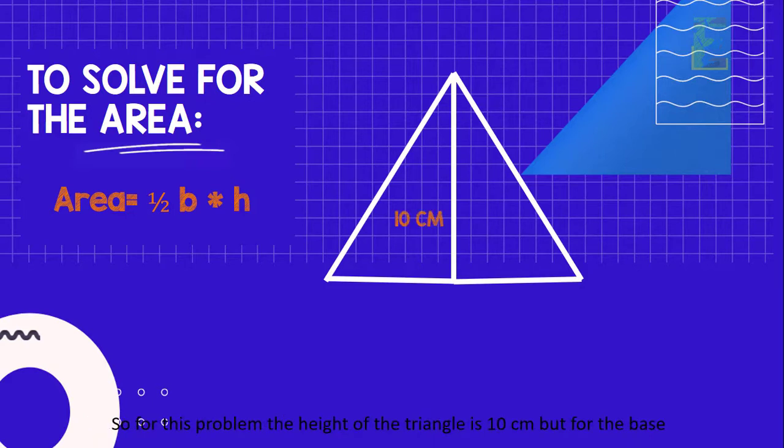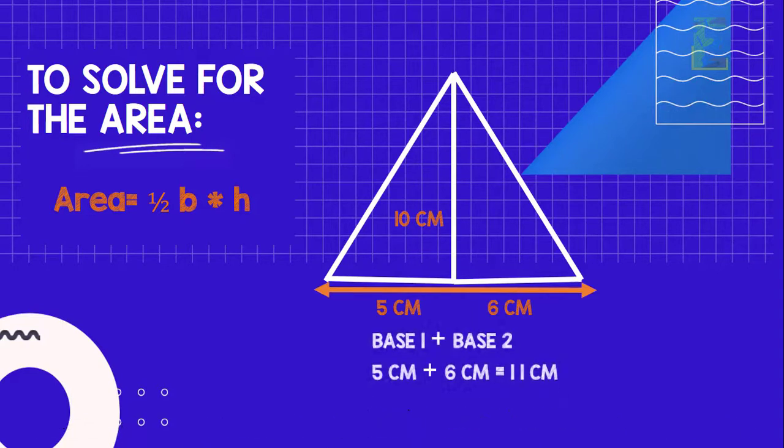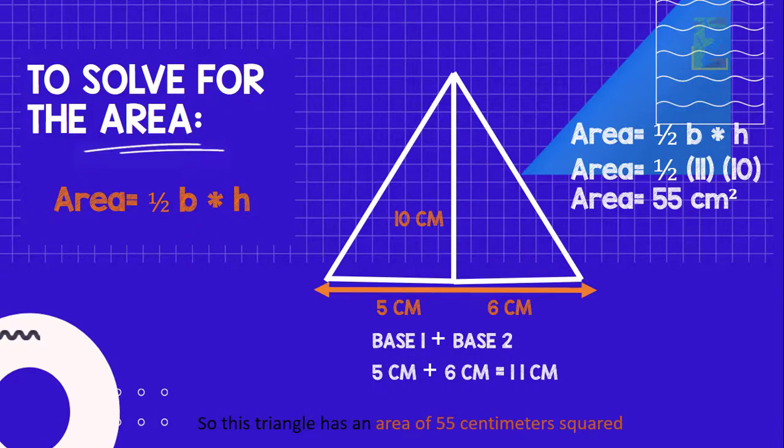But for the base, we need to add the left base and the right base because the base of the whole triangle is its entire base length which is 5 cm plus 6 cm. Therefore, the base is 11 cm. So this triangle has an area of 55 cm squared.